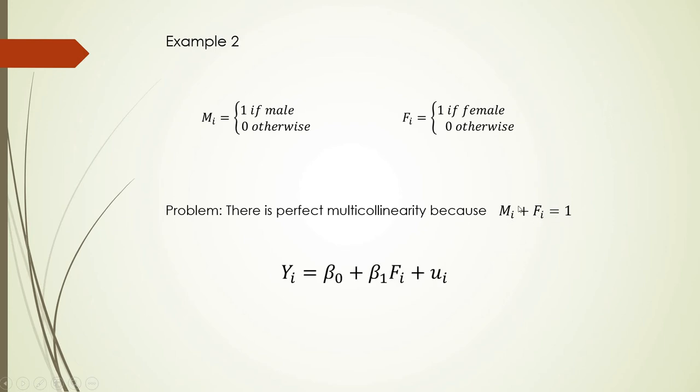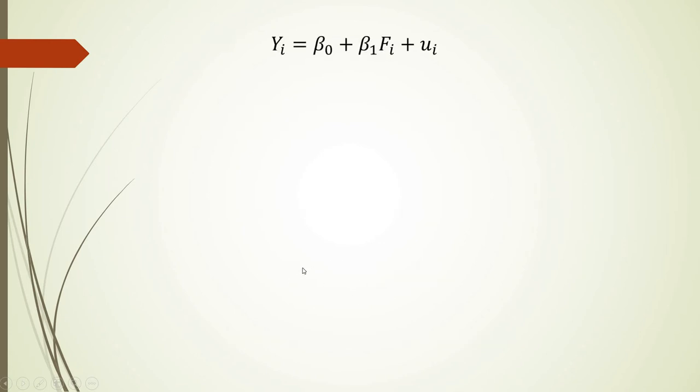The solution is that we will exclude male gender, for example. You can exclude any of these two genders. The result will be the same. And then leave only females. So beta one will tell you the results for females. But male becomes the baseline in the equation. So theoretical value for males is here in beta zero. Expected value for male will be beta zero. Expected value of dependent variable for females will be beta zero plus beta one.